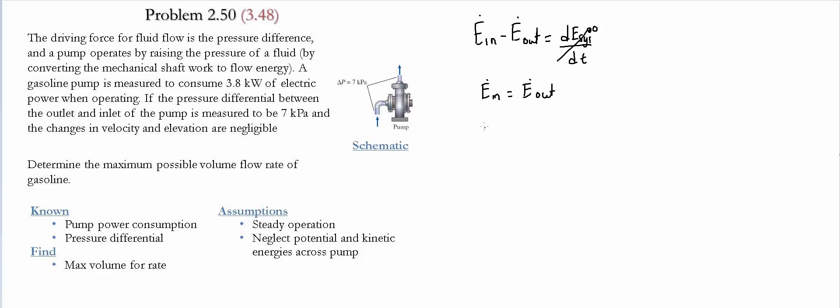We can write this as the electrical work. The rate of flow work is the mass flow rate times the pressure at the entrance times the specific volume at the entrance. The rate of flow work leaving is the mass flow rate times the pressure at the exit times the specific volume at the exit.